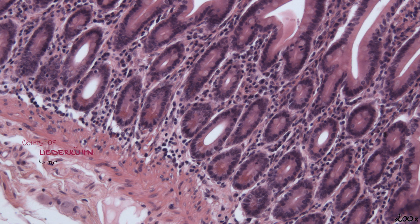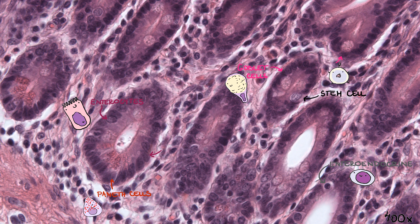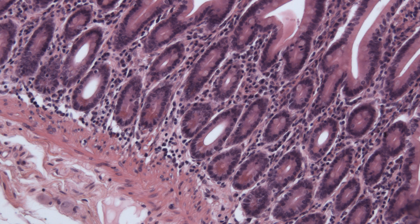The crypts of Lieberkühn are tubular glands that are slightly curved, which is why multiple sections of a single gland may be visible. Near the lamina muscularis mucosae, at the base of the glands, we can find Paneth cells with eosinophilic granules. Glands also contain stem cells, enteroendocrine cells, goblet cells, and enterocytes. Note this macrophage visible in the loose connective tissue of the lamina propria. There is also Meissner's submucosal plexus present here.